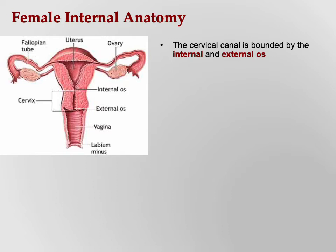The cervix is the neck of the uterus. There is a narrow passageway called the cervical canal, bounded on both ends by the internal and external cervical os — 'os' meaning opening. The internal os opens into the uterine cavity, and the external os opens into the vagina. The vagina is roughly 10 centimeters in length, and the average erect penis is right around 10 centimeters — nature designed this perfectly.